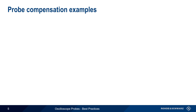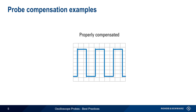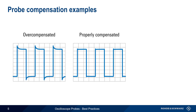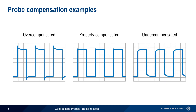A probe is properly compensated when the tops of the displayed compensation signal are essentially horizontal. Overcompensated probes create overshoot on the leading edge of the signal, and undercompensated probes cause undershoot on the leading edge. The compensation capacitor is adjusted until the waveform has rectangular edges, which usually only takes a small fraction of a turn.